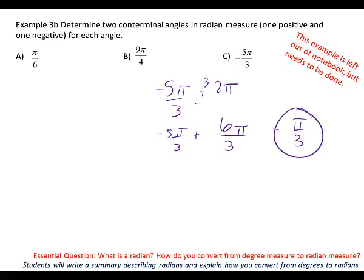I need to get a negative coterminal angle, so I should probably subtract. Instead of subtracting 2π, I'm going to go ahead and subtract 6π over 3 because it's already in the common denominator. What do we end up with? Negative 11π over 3. Good.